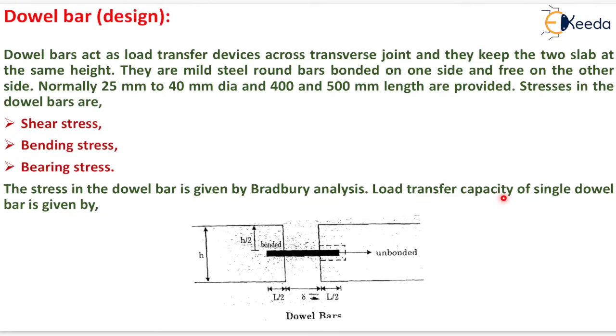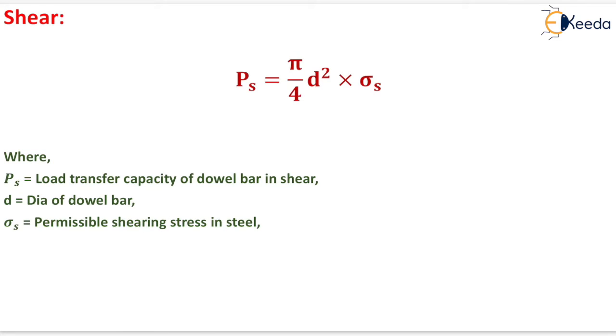Load transfer capacity of a single dowel bar in shear is given by: P_s = (π/4) × d² × σ_s, where σ_s is the permissible shearing stress in steel and d is the diameter of the dowel bar.